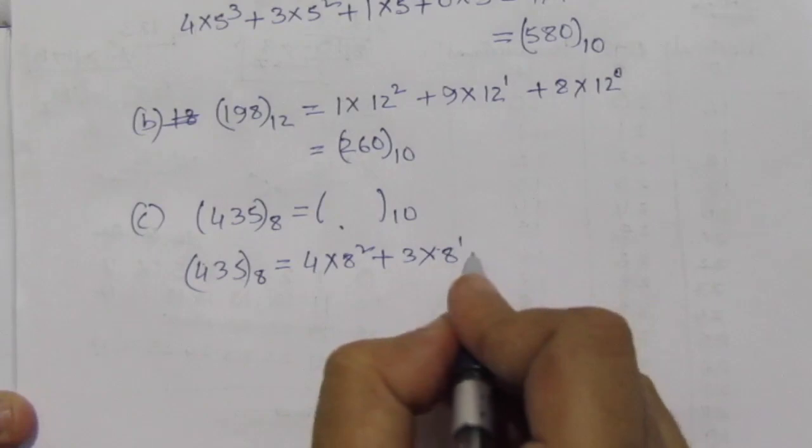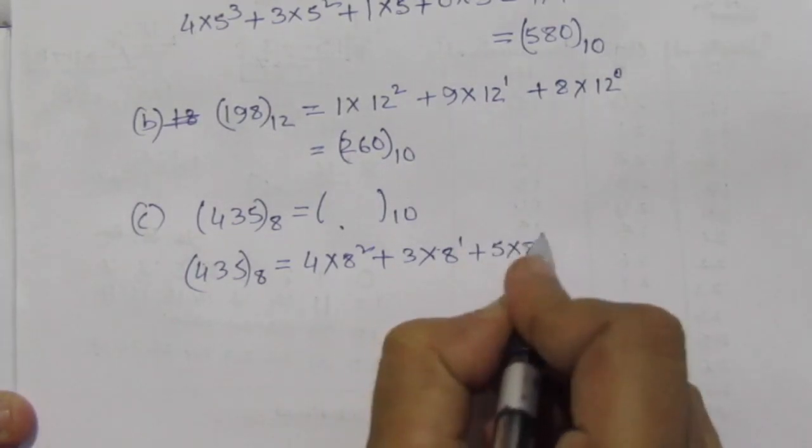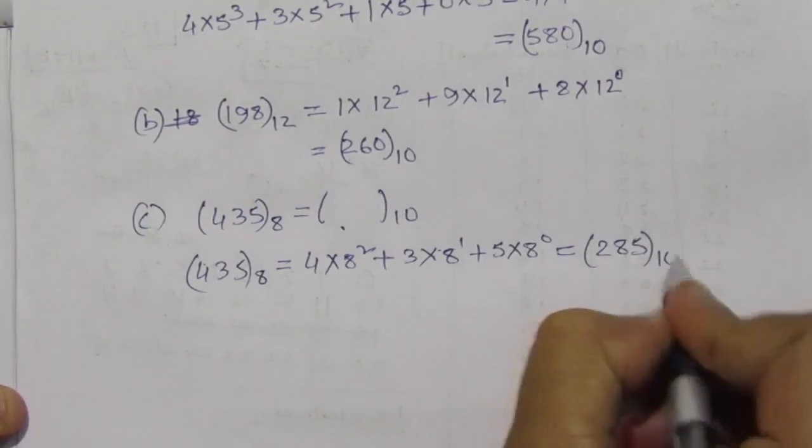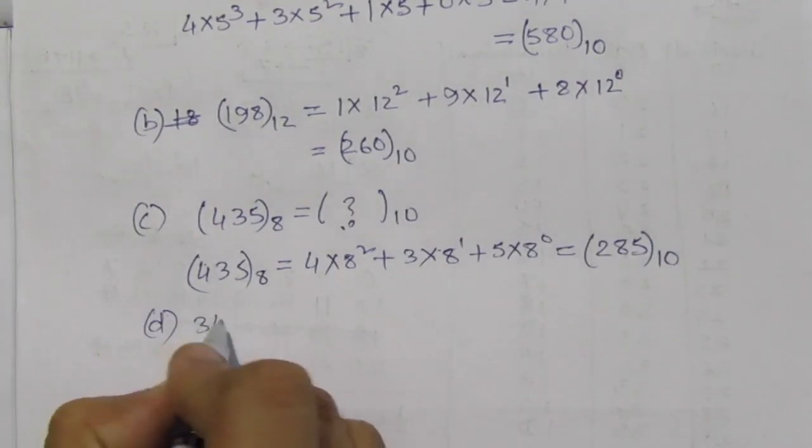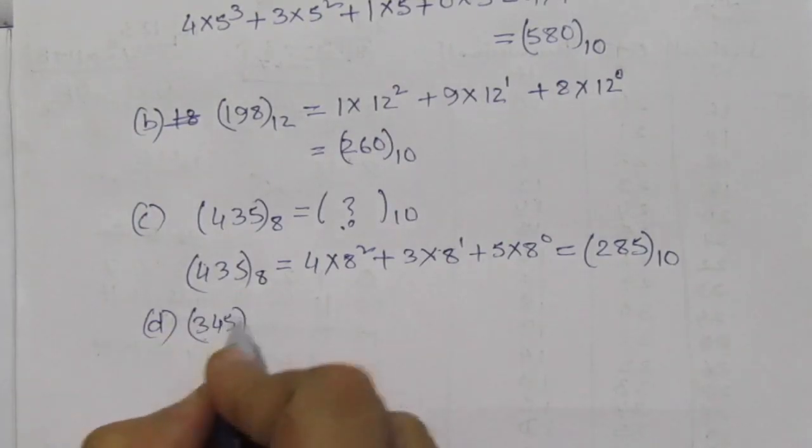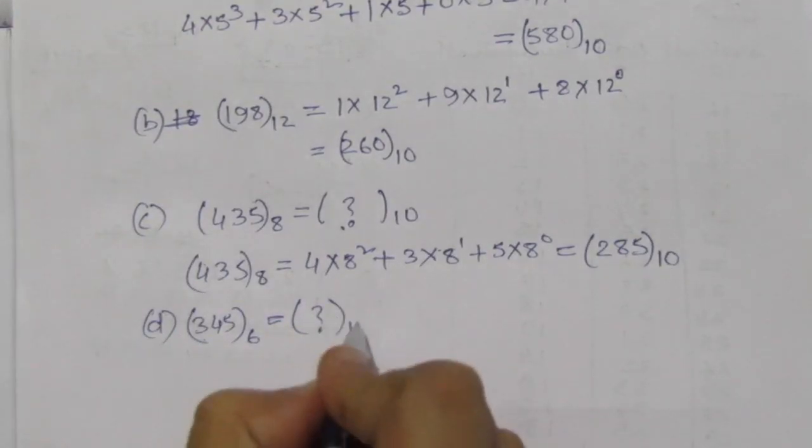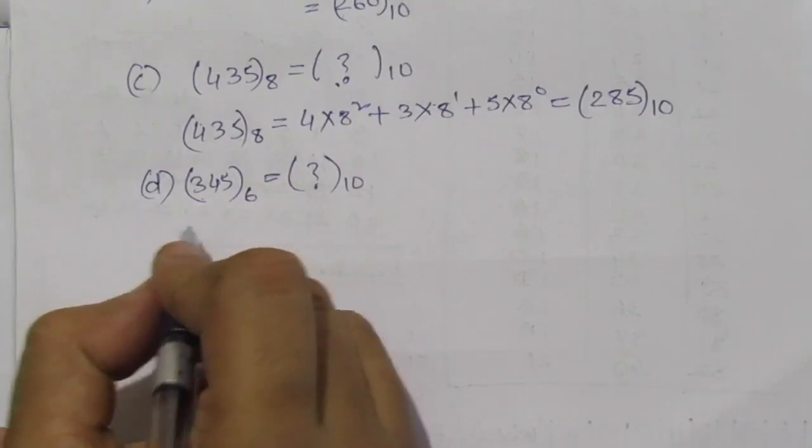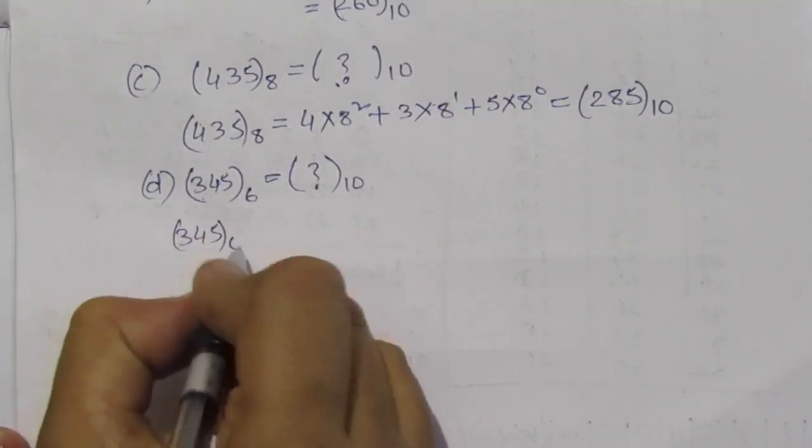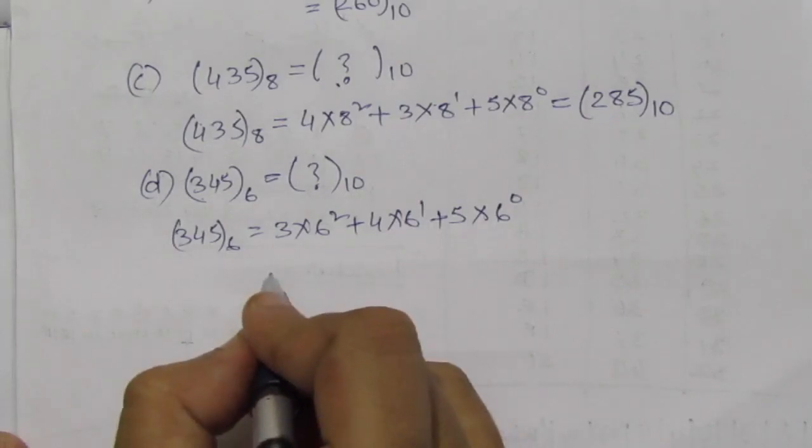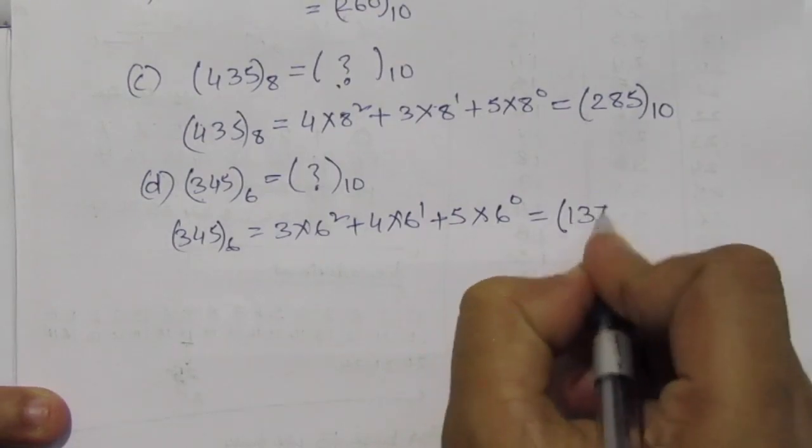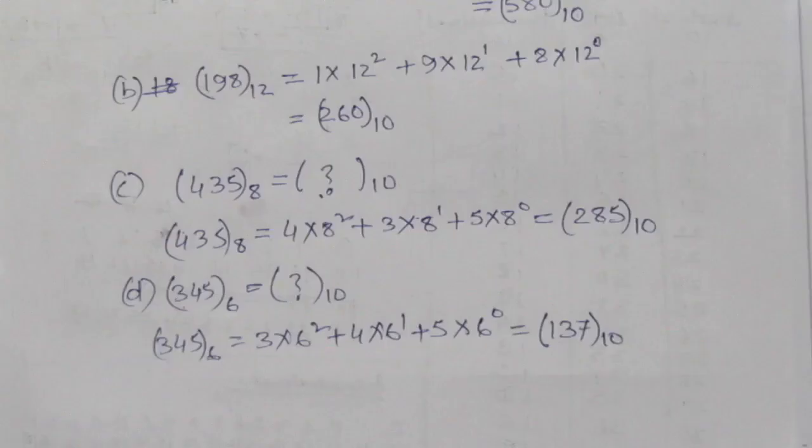And the fourth part (d) is (345) base 6 equals what in decimal. Therefore, (345) base 6 equals 3 into 6 squared plus 4 into 6 to the power 1 plus 5 into 6 to the power 0, so the answer is (137) base 10.